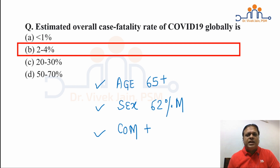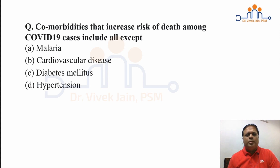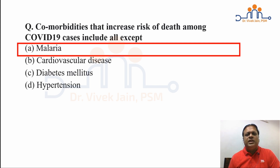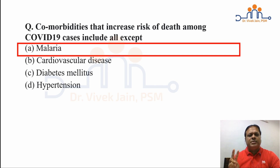The next question is based on comorbidities affecting COVID-19 outcomes: comorbidities that increase the risk of death among COVID-19 cases include all of the following except — malaria, cardiovascular disease, diabetes mellitus, or hypertension? Cardiovascular disease, diabetes mellitus, and hypertension are known comorbidities that increase the risk of death; malaria does NOT increase the risk of death in COVID-19 patients per se. The global ranking of comorbidities is: (1) cardiovascular disease, (2) diabetes mellitus, (3) chronic respiratory disease, (4) hypertension, (5) carcinoma/cancers.